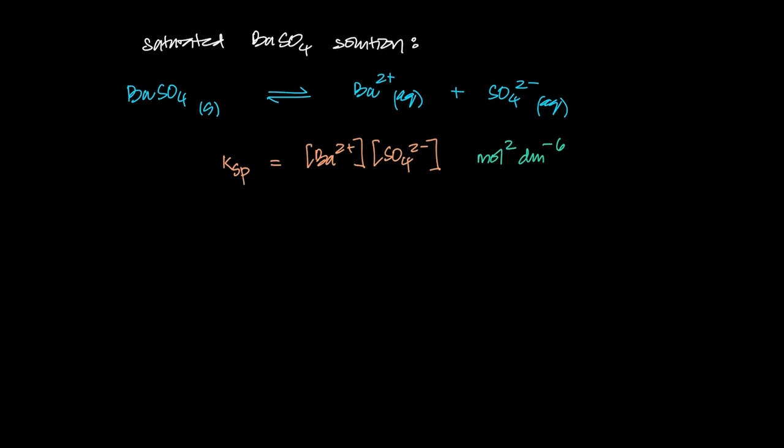So the Ksp unit here will be moles squared dm⁻⁶. Reminder that Ksp is just the equilibrium constant for a reaction where a solid is dissolving in water and forming a saturated solution. This Ksp term only applies for such an equilibrium between a solid and its saturated solution, no other place. It's called solubility product, ionic equilibria, solid equilibria - multiple names for this.